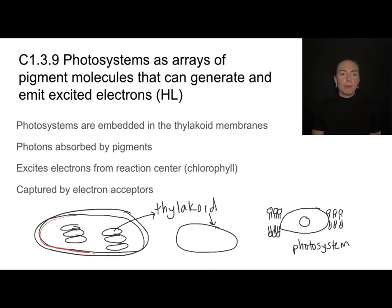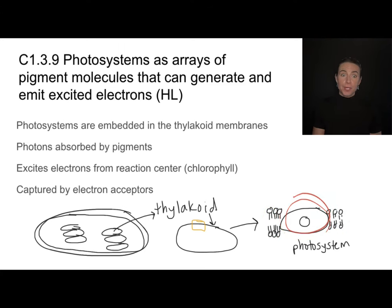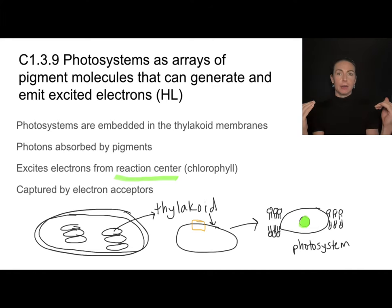Here we have the double membrane of a chloroplast and inside the chloroplast are these grana. These grana are made of thylakoid discs. If I take out a thylakoid disc and chop it in half and look at it from the side, I can focus in on just the thylakoid membrane. Embedded within this thylakoid membrane are structures called photosystems. There's a lot of stuff in photosystems, one of which being a reaction center. This reaction center is full of chlorophyll, and its function is to contain electrons that can be excited when chlorophyll absorbs photons of light. These electrons are then captured by electron receptors.